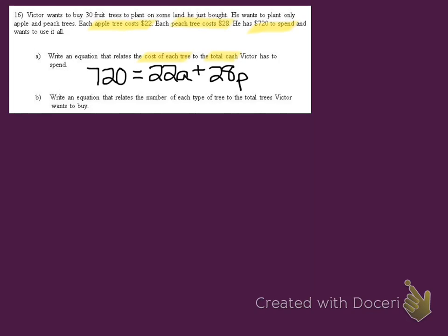Now on letter B, it says write an equation that relates the number of each type of tree to total trees Victor wants to buy. So now we need to look at the problem and find the information that goes along with how many trees he's purchasing. The information they give us is that he's buying 30 total trees. In this rule, we don't need to multiply anything to our variables because our variables by themselves represent how many trees he's planting. So this would be our system of equations for this situation.